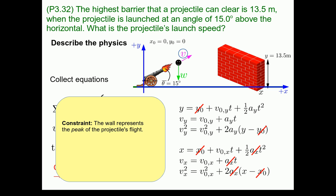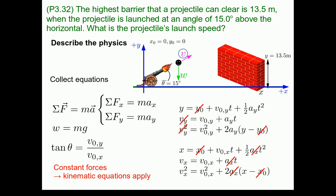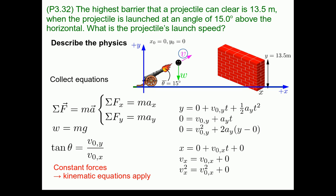And then we have our sort of tricky one, that the wall represents the peak of the projectile's flight. And at the peak of the flight, the y component of the velocity is zero. So anywhere we see a v sub y, we can cross that out. So now we've got a set of equations. We've crossed out all the terms that are zero. Now I'm going to replace everything we've crossed out with a zero.